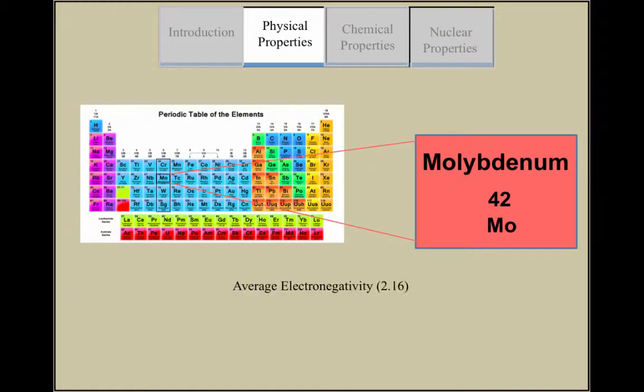Molybdenum has the sixth highest melting point. It also has a high density. Because it is a transition metal and located in the middle of the periodic table, it has an average electronegativity.